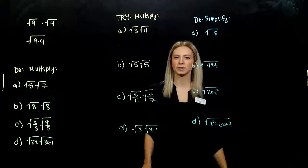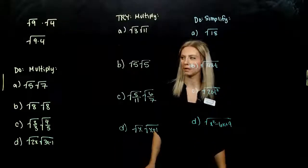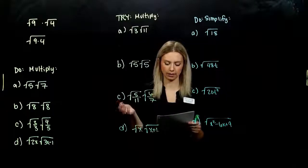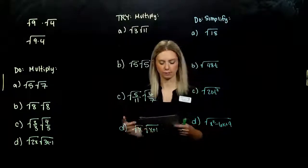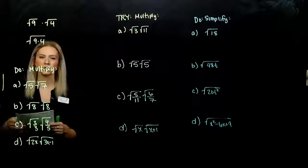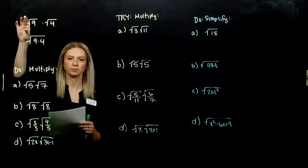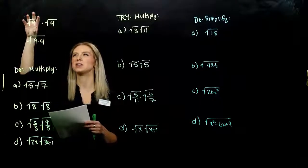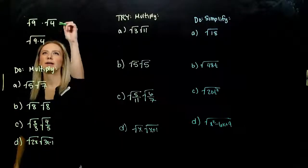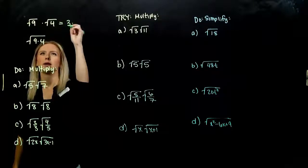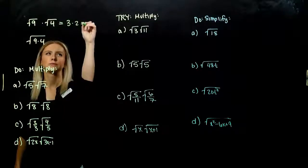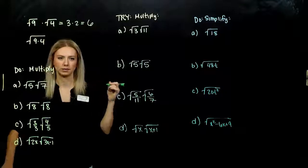Now that we've got a feel for those radicals, we're going to start combining them in different ways. The first operation we'll look at is multiplication, and eventually simplification into a nice form. For example, if we evaluate the roots individually, the square root of 9 is 3 and the square root of 4 is 2, so multiplying them together gives us 6.